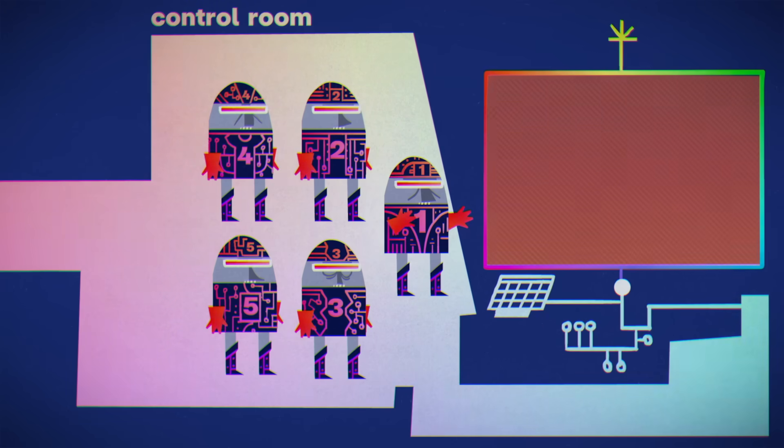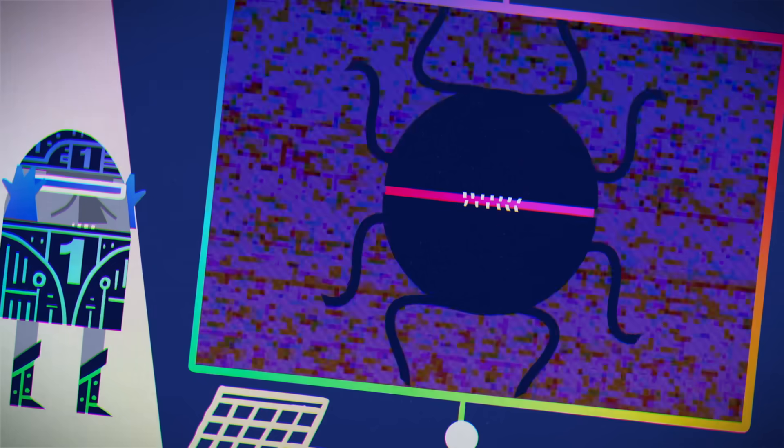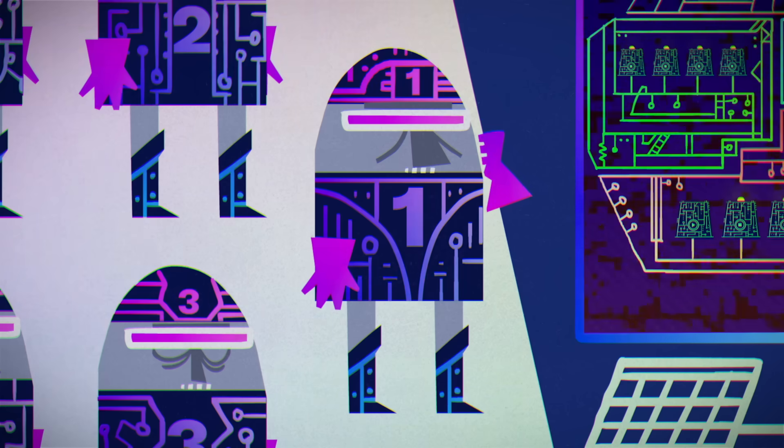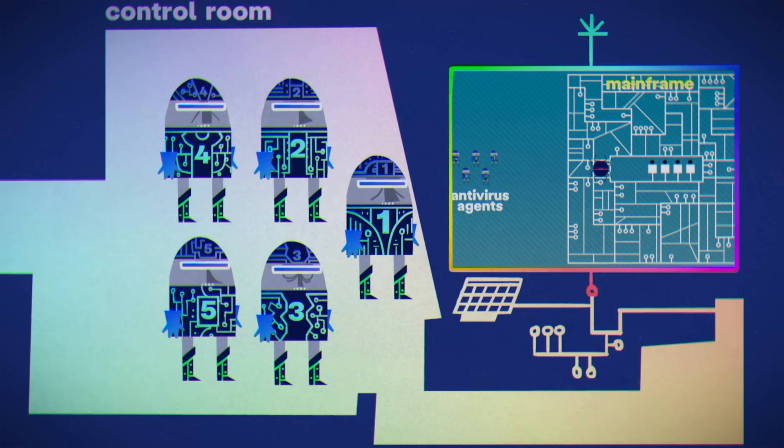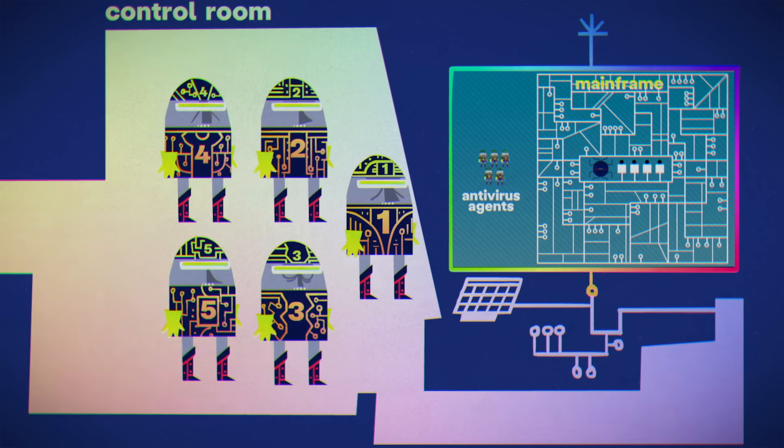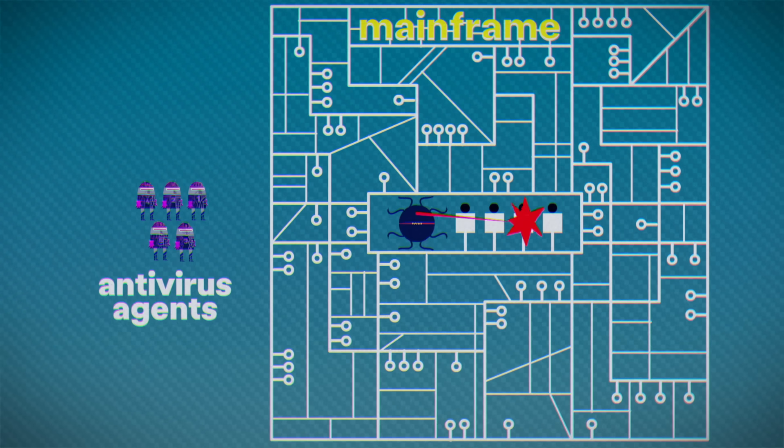Your antivirus squad is up against a particularly sadistic bit of malicious code that's hijacked your mainframe. What you've learned from other infected systems, right before they went dark, is that it likes to toy with antivirus agents in a very peculiar way. It corrupts one of the four disks that run your mainframe, represented by lights showing which are on and which are off.